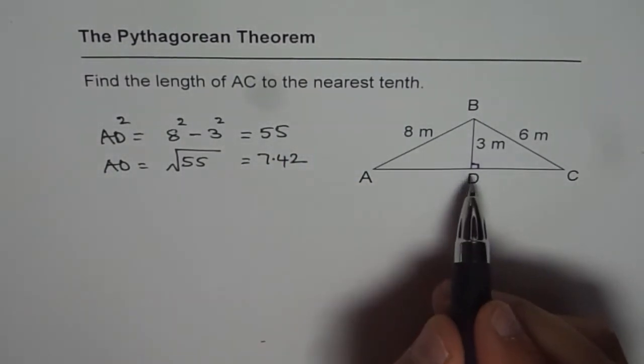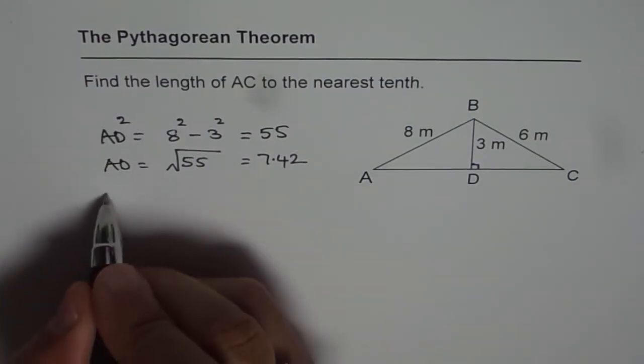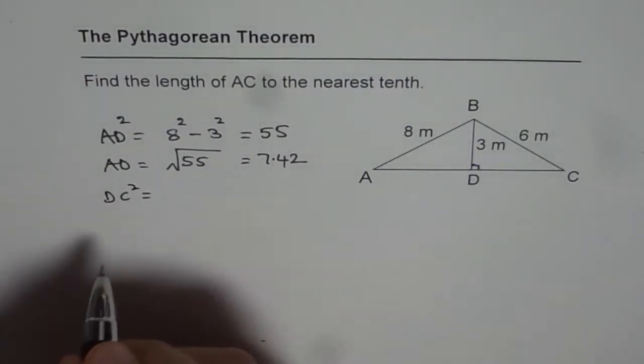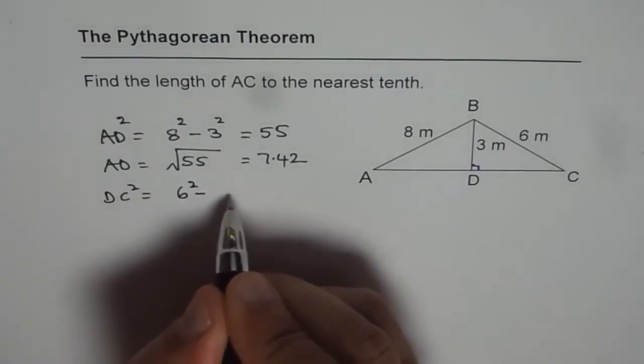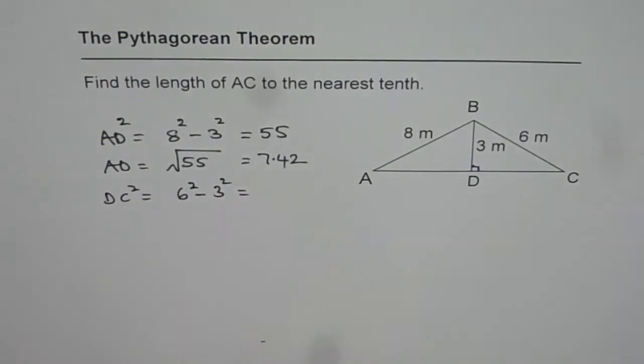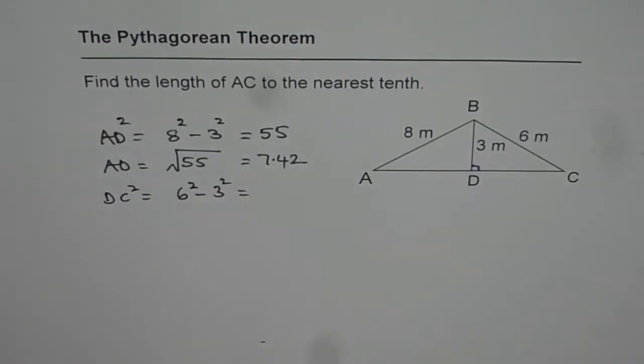Similarly, we can find what DC is. Now DC squared is equal to 6 squared minus 3 squared, which is 36 minus 9, right?